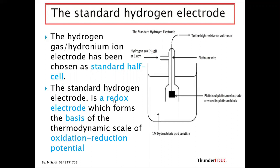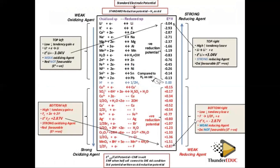The standard hydrogen electrode is a redox system — it can have oxidation and reduction — which forms the basis of the thermodynamic scale of oxidation-reduction potential. Whatever we do, we relate it to hydrogen. We regard hydrogen as zero, just as when you count you start from zero and go positive or negative. Hydrogen is the standard from which we start.